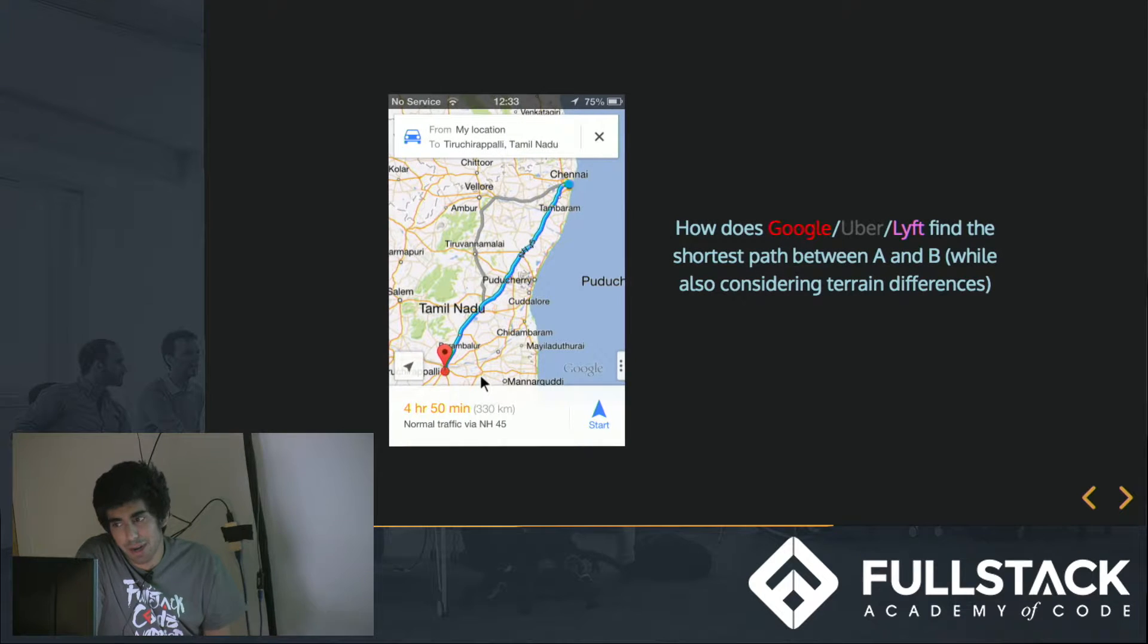So on an entirely different note, whenever we use our Uber apps or Google or Lyft, it makes it look so easy how it finds the shortest path between two locations, and I always wondered how can it do that because there's so many different ways to get from a location A to a location B.